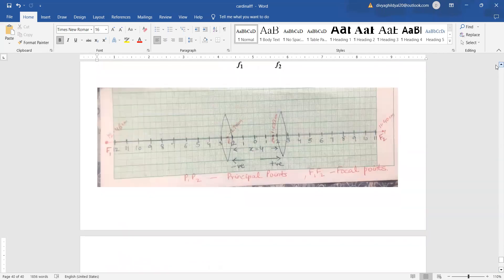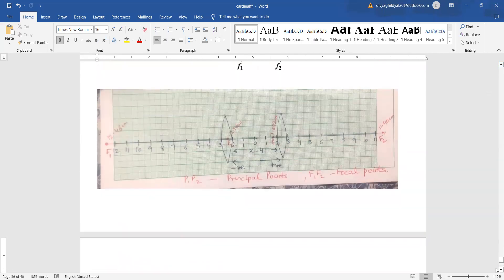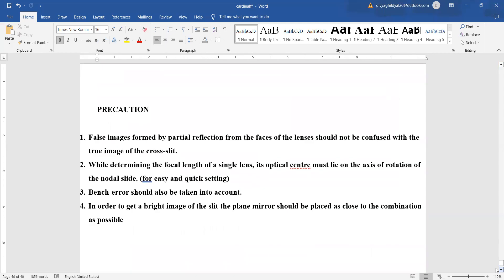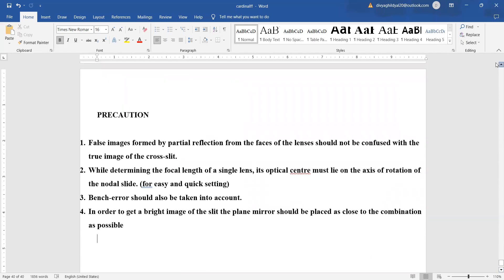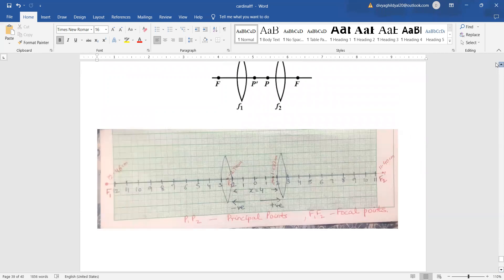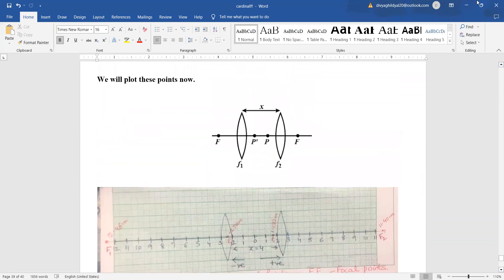The biggest precaution of this experiment is to ensure no bench error is there. Do not take readings of false images. To get a bright image of the slit, the plane mirror should be placed quite close to the combination as possible. If you want a PDF of what has been told here, you can request on the number 9810-320-303 or drop a mail. Thank you.